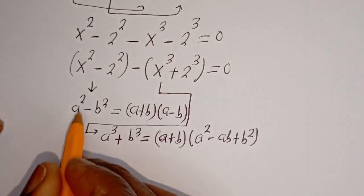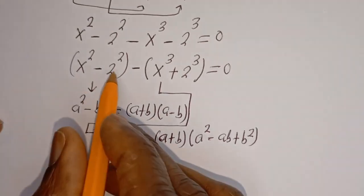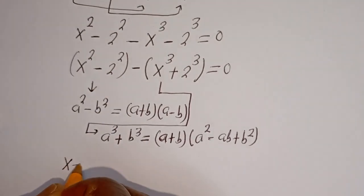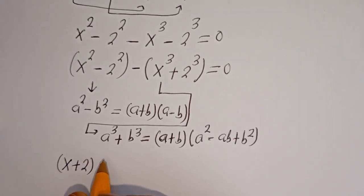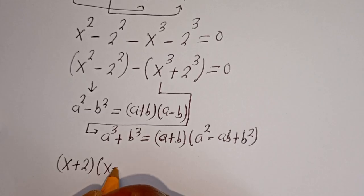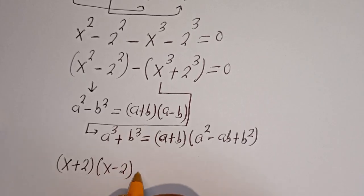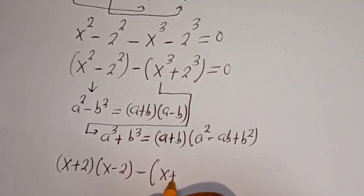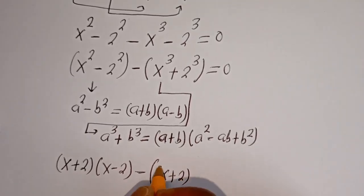And this can be written as: we have s plus 2 bracket s minus 2, then minus s plus 2 bracket...